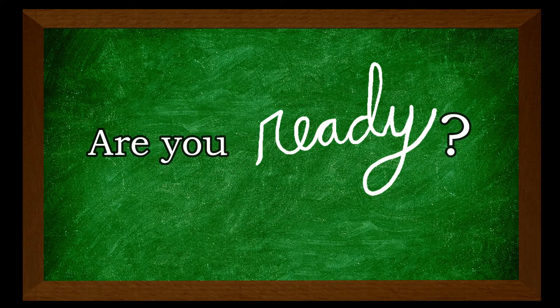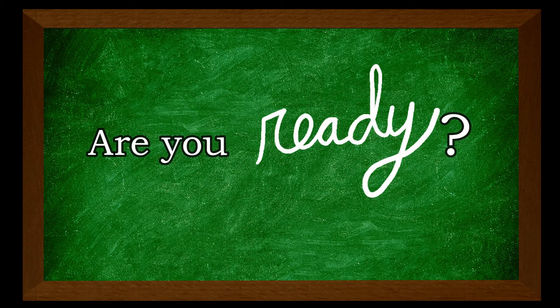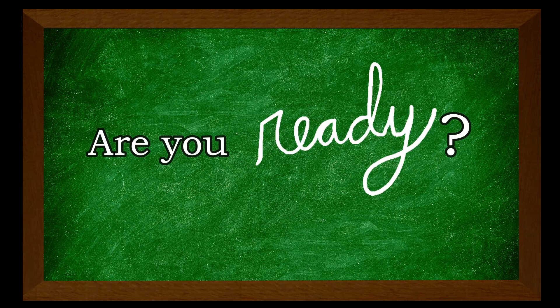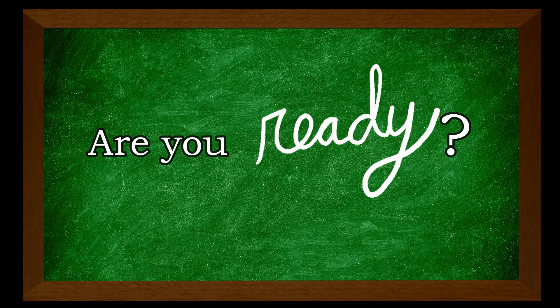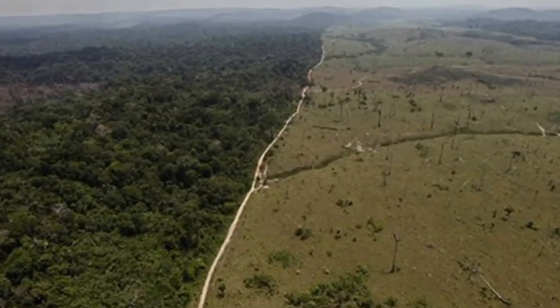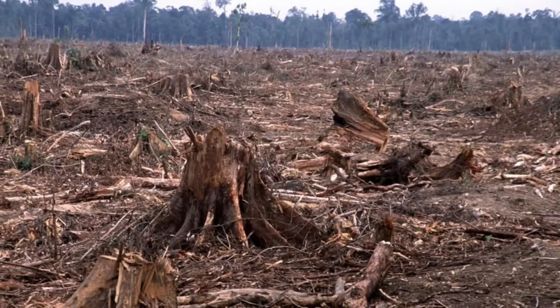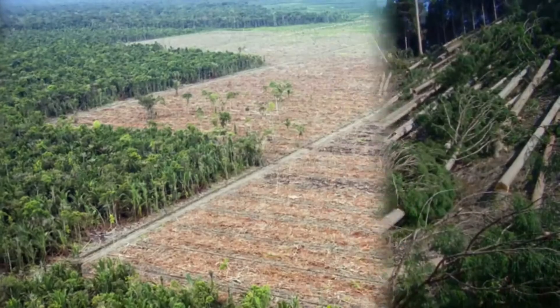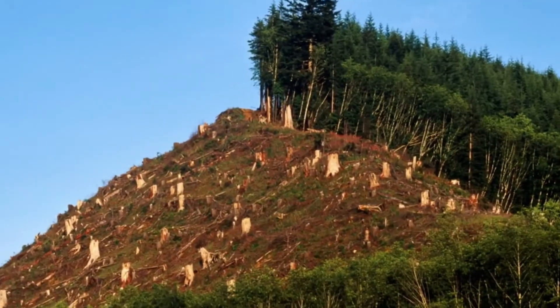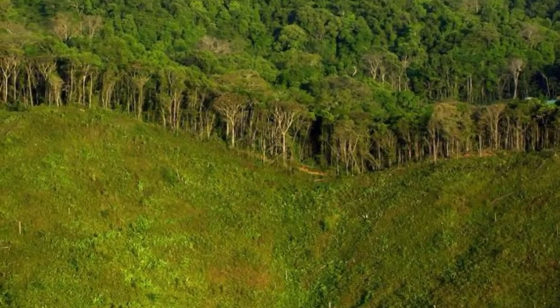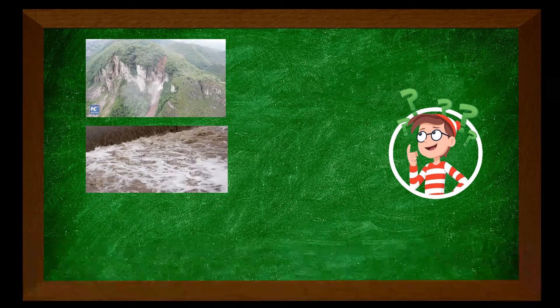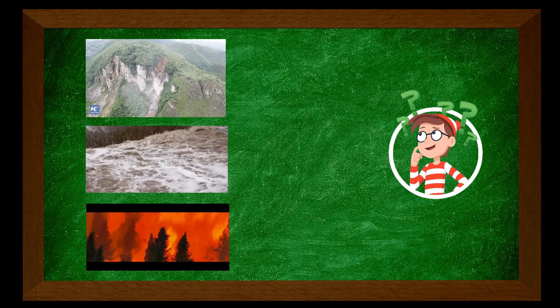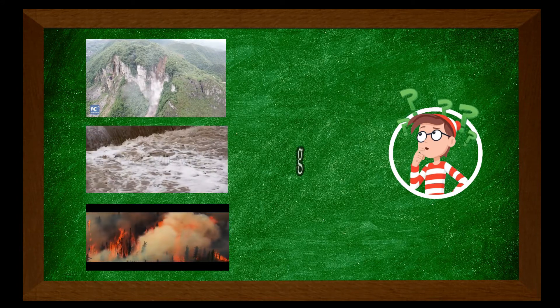Are you ready for the first example? Here it goes! Listen well! If trees are cut down on mountains, what will most likely happen? If you thought of landslides, floods, and global warming, you predicted right.